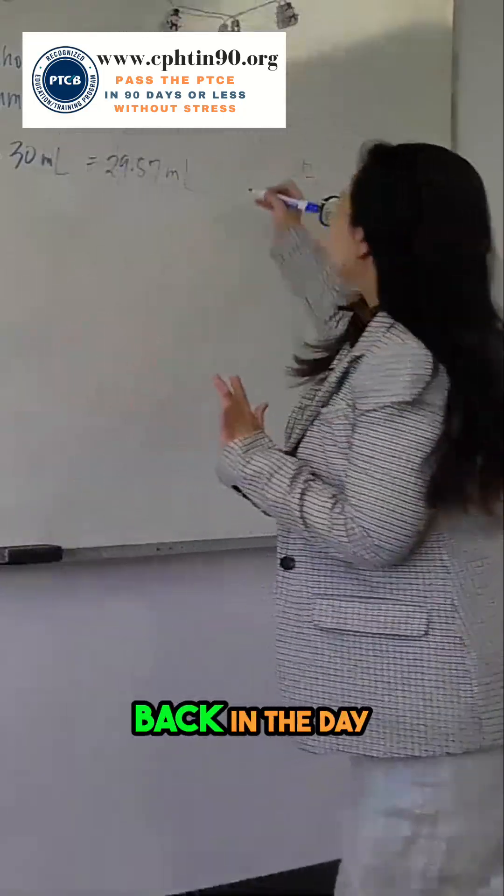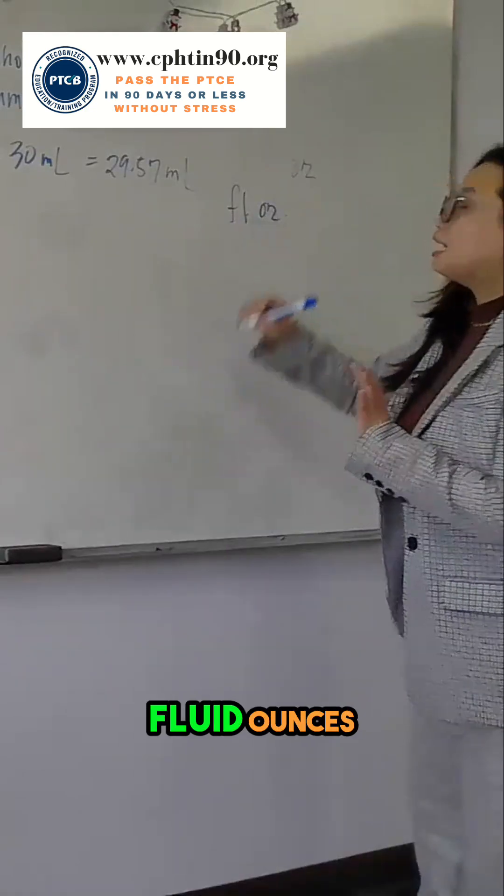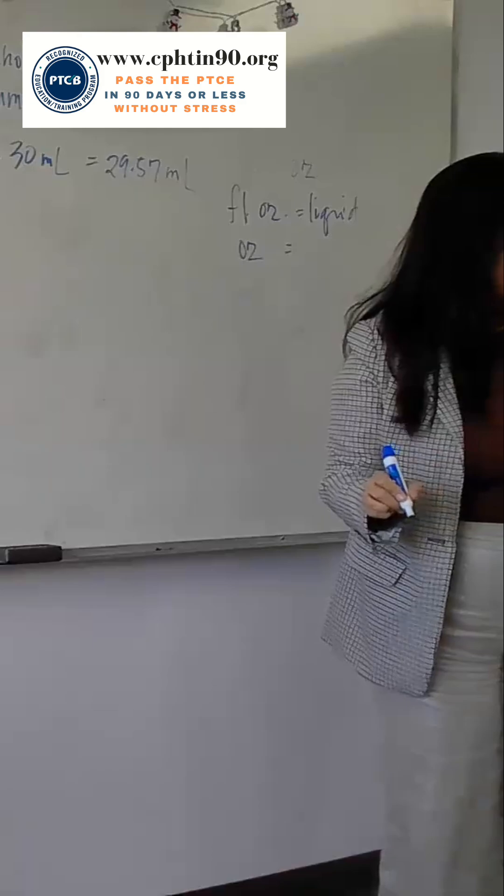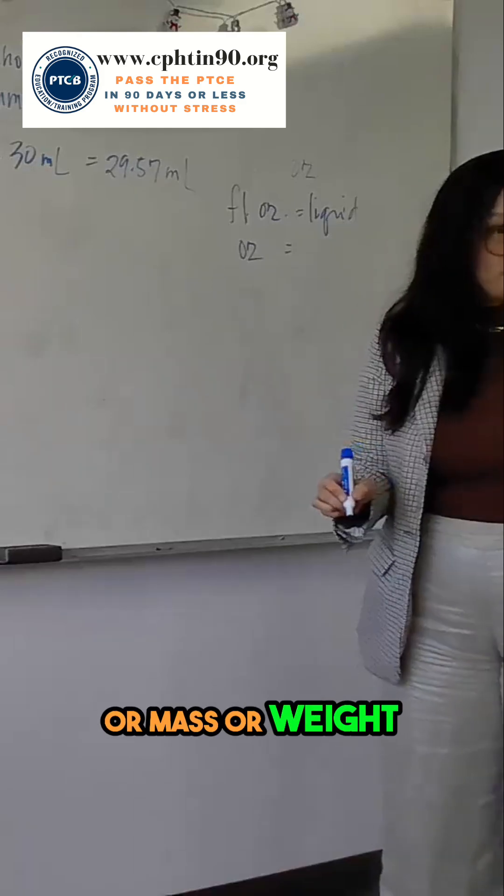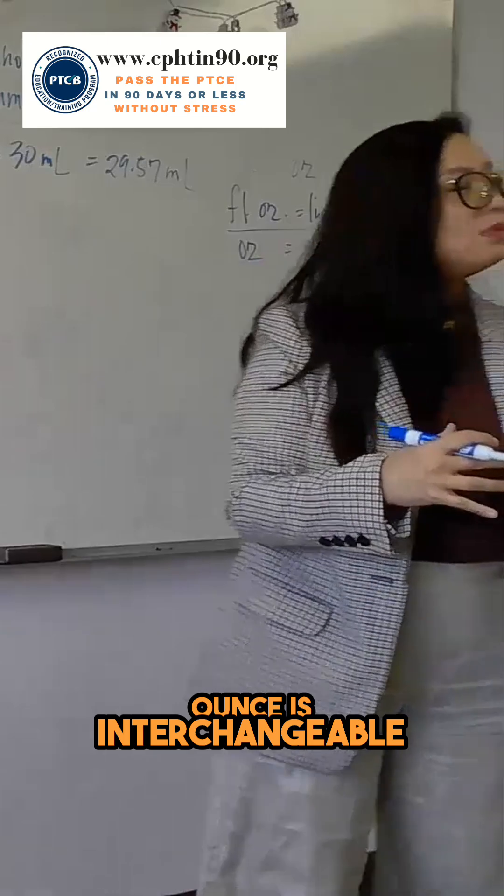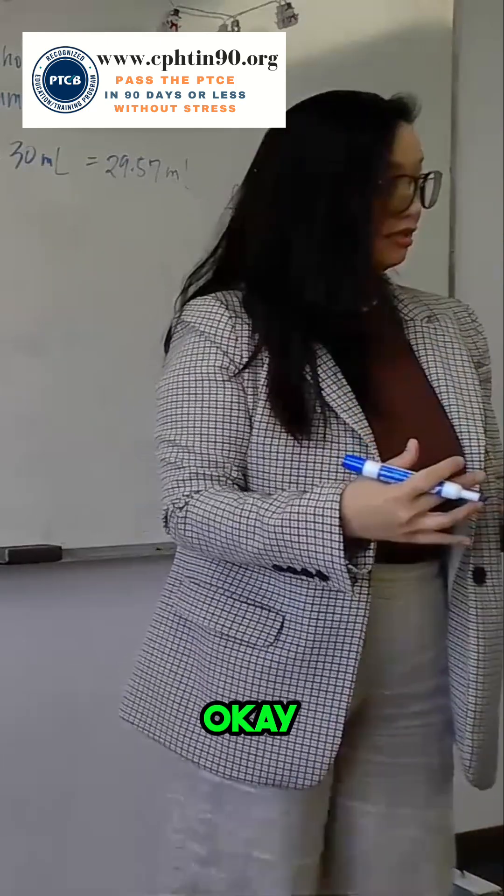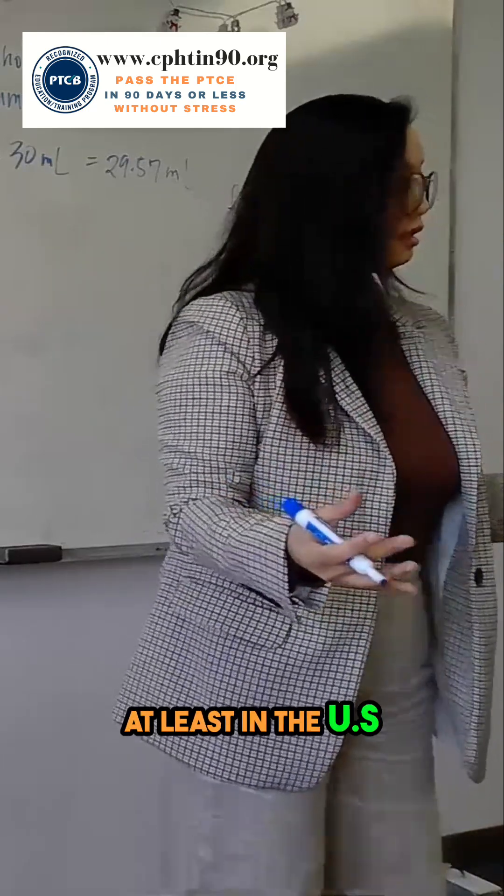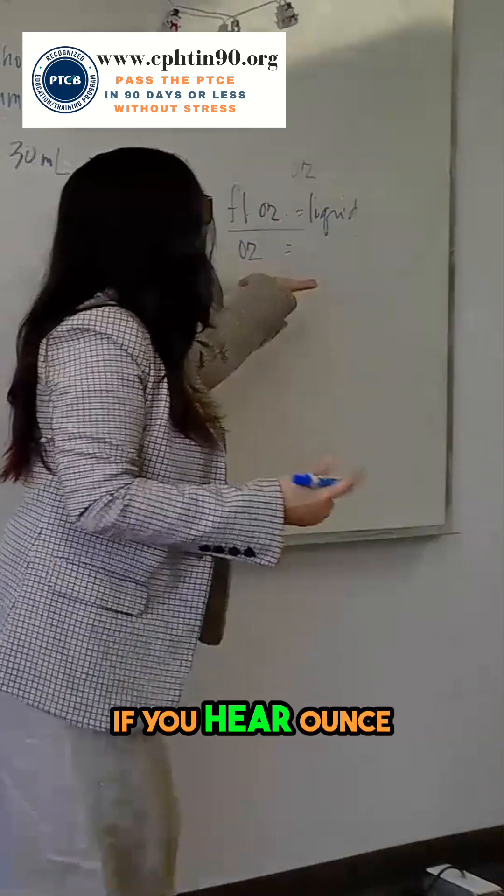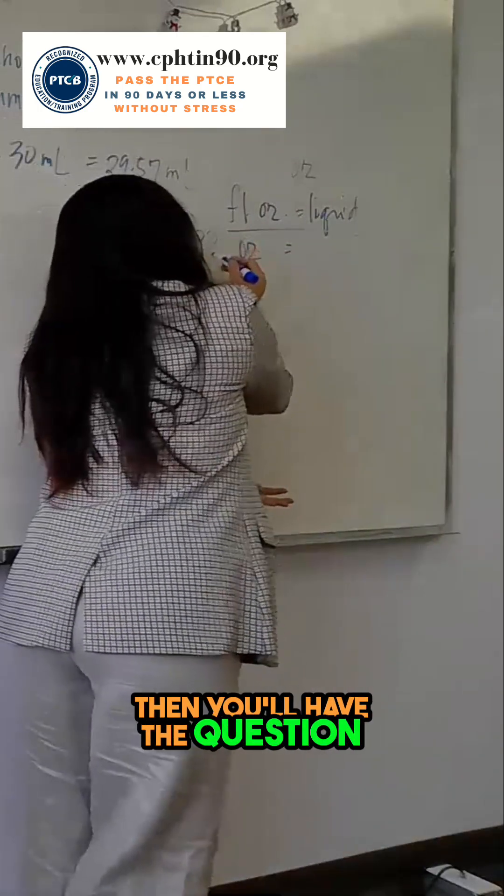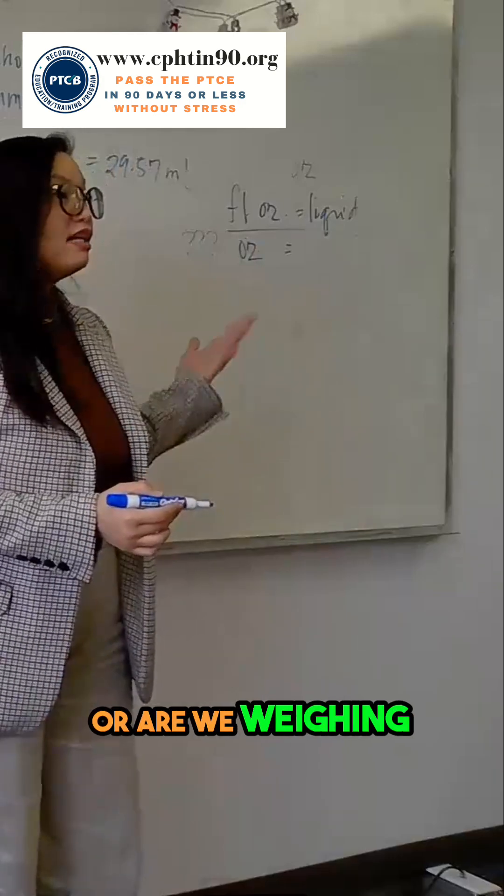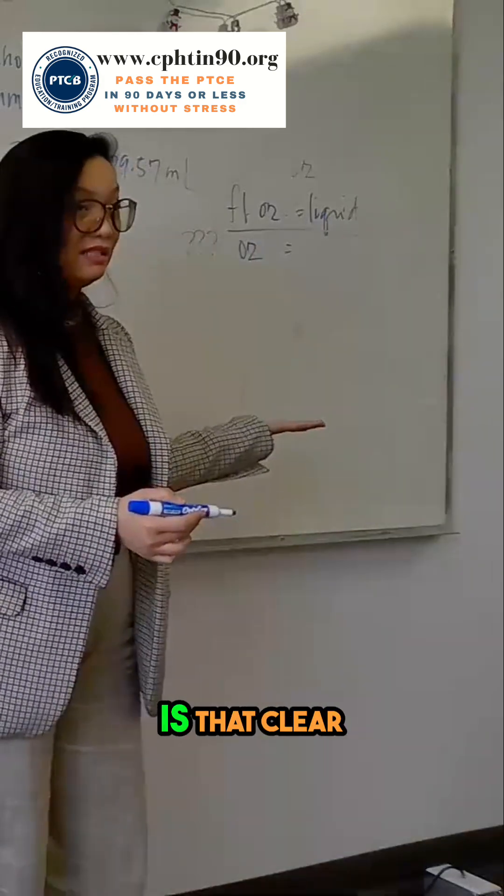Technically, back in the day, we used fluid ounces for liquid and an ounce for solid, or mass, or weight. Now this is interchangeable, volume and mass, at least in the U.S. But if you hear fluid ounces, that's talking about liquid. If you hear ounce, then you'll have to question, are we weighing mass or weight, or are we measuring volume or liquid? Is that clear?